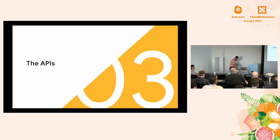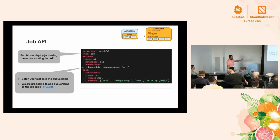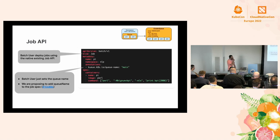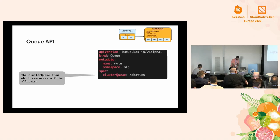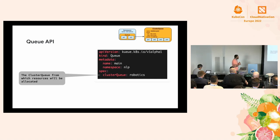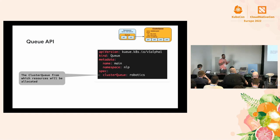We use the normal Job API. The only thing you need to do to use a specific queue is set the queue annotation — we're working to make that a first-class parameter called queue name in the job spec. The Queue API itself is very simple: as the namespace-scoped resource, in its simplest form it only has a pointer to the ClusterQueue where resources will be allocated. This model of splitting the queue into a namespace resource and a cluster resource fits the Kubernetes model, where namespace is the organizing concept for teams and RBAC.